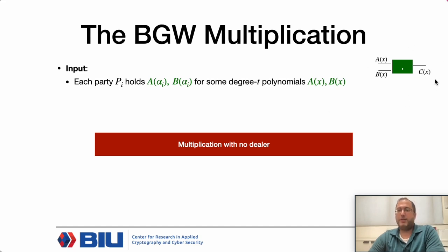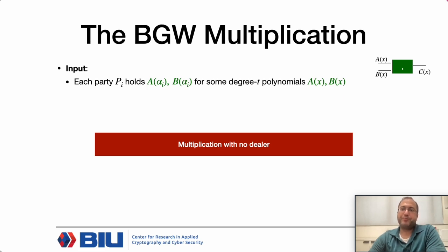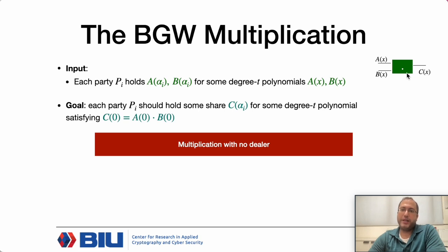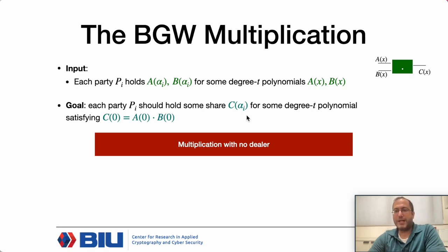We are looking at the protocol for a multiplication gate. Each party P_i holds shares A(α_i) and B(α_i) for some degree-t polynomials A(x) and B(x) respectively. The goal is that each party holds a share C(α_i) for some degree-t polynomial satisfying that the constant term is the product of the two constant terms.